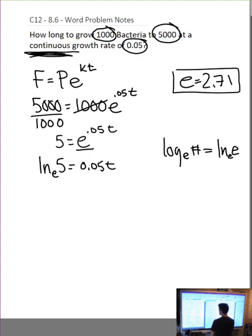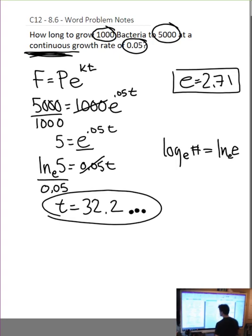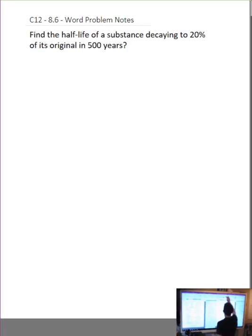And then, to solve for t, I can simply divide both sides by 0.05. And I get t equals 32.2. Now, as you notice in the question, I haven't included any years. So, make sure that you include your units, which I have just forgotten. t equals 32.2, whatever time frame.